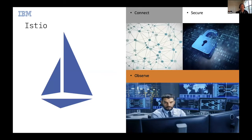Istio is fundamentally an open service mesh platform. It's an open source, multi-vendor project. The latest stats show around 300 companies and over 400 contributors. It was rated as the fastest growing cloud native project from GitHub last year, so it has a lot of momentum.